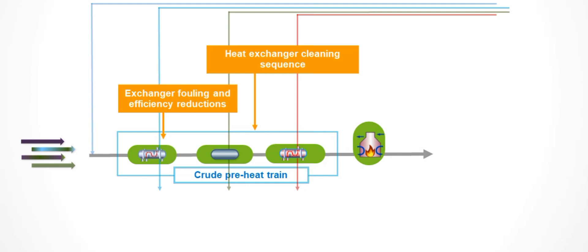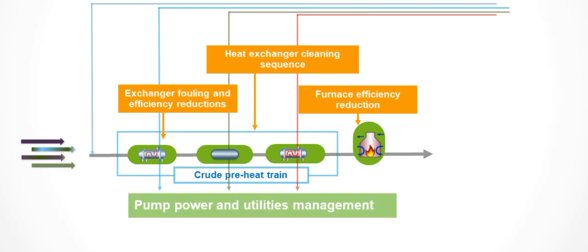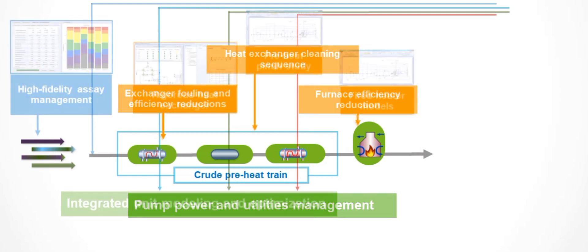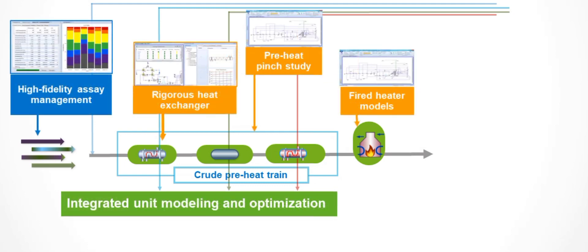The inefficiencies in the preheat train are compounded by the fuel burned in the furnace. Minimizing the cost of fuel consumption is a key element of the optimization of the preheat process. The fuel used in the furnace and other utility requirements to move fluid through the preheat are other considerations during operation.